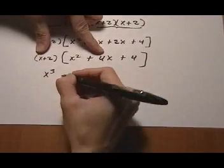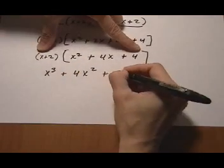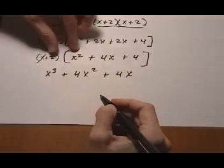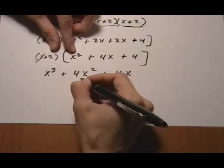Now we distribute: x times x² gives us x³, x times 4x is +4x², x times 4 is +4x. That one's done. Now the 2: 2 times x² is 2x²—I'll line it up here because it'll be long if I don't.